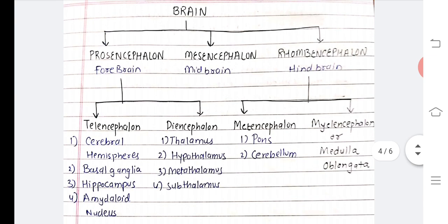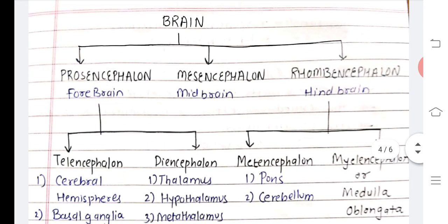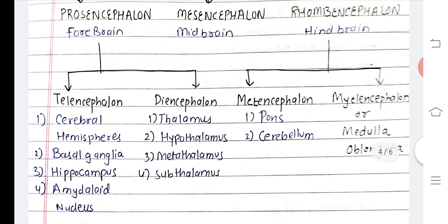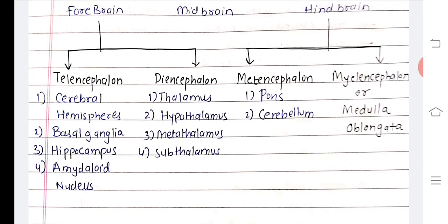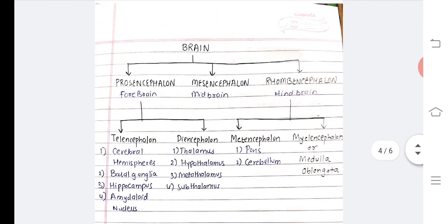Our brain is divided into prosencephalon, mesencephalon, and rhombencephalon. Prosencephalon is the forebrain, mesencephalon is the midbrain, and rhombencephalon is the hindbrain. The forebrain has two parts: telencephalon and diencephalon. Telencephalon includes the cerebral hemisphere, basal ganglia, hippocampus, and amygdaloid nucleus. Diencephalon includes the thalamus, hypothalamus, metathalamus, and subthalamus. The midbrain has no further divisions. The rhombencephalon is divided into metencephalon and myelencephalon or medulla oblongata. The metencephalon comprises the pons and cerebellum. This chart is very important for understanding how the brain is divided.